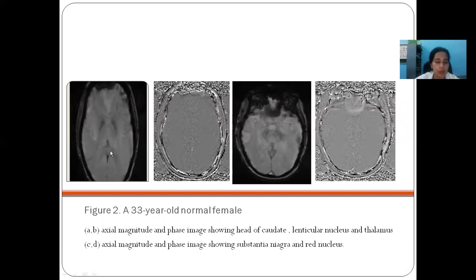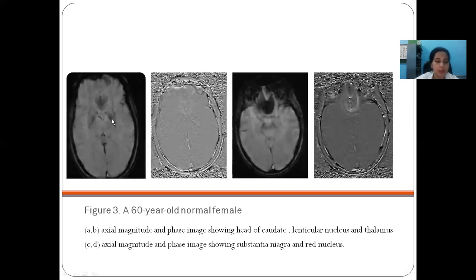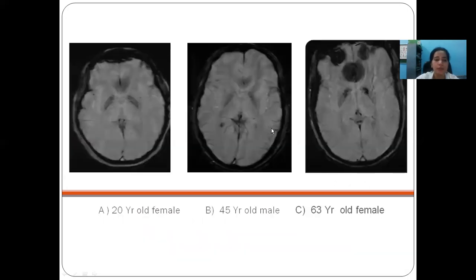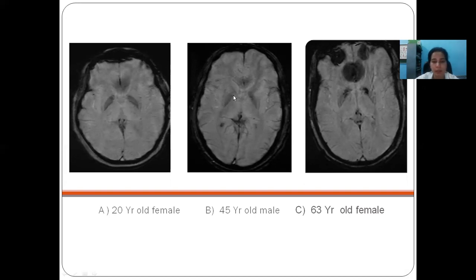These are the images of a 33-year-old normal female showing increased hypointensity in the globus pallidus, putamen, caudate, substantia nigra, and red nucleus. These are the images from a 60-year-old normal female showing hypointensity in the globus pallidus, putamen, caudate, substantia nigra, and red nucleus. Apart from the increase in hypointensity of basal ganglia with age, a systematic pattern of mineralization was noted in the putamen extending from the posterolateral to the anteromedial aspect. In the globus pallidus, small hypointense bands showing an increase in number with increasing age were observed.